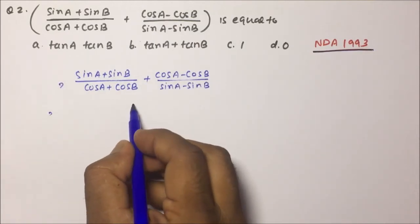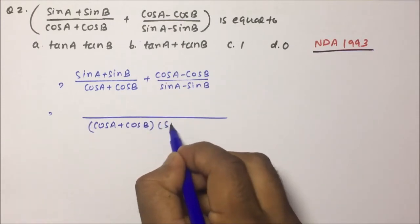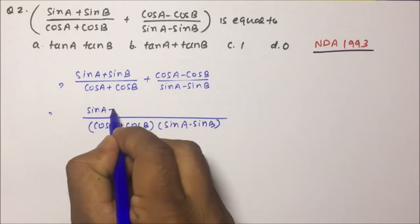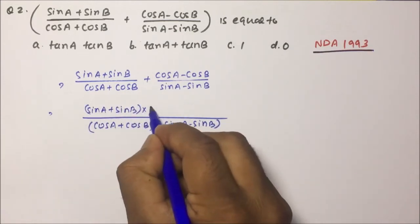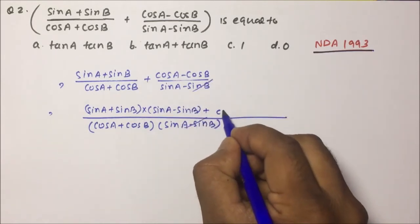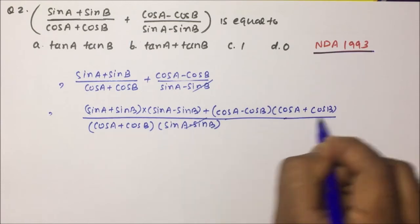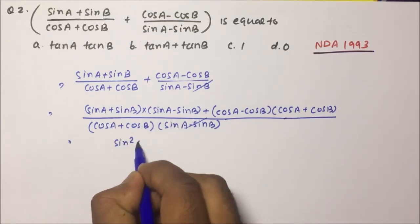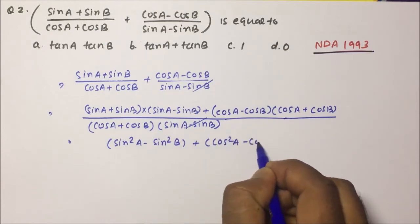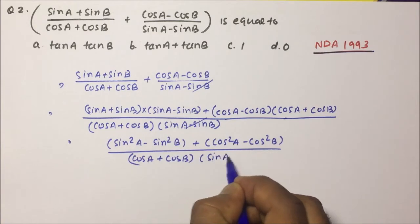We will try to take the LCM, which will be (cos A + cos B) multiplied by (sin A − sin B). After cancelling, the numerator becomes: (sin A + sin B)(sin A − sin B) plus (cos A − cos B)(cos A + cos B), all divided by (cos A + cos B)(sin A − sin B). Using the identity (a + b)(a − b) = a² − b², this gives sin²A − sin²B plus cos²A − cos²B in the numerator.